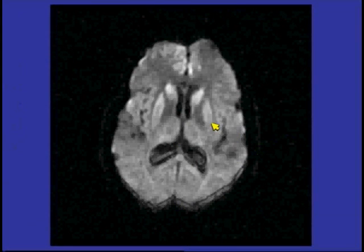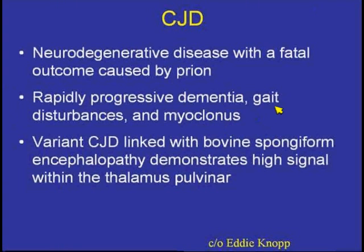The diffusion-weighted scan shows high signal intensity in the caudate nuclei bilaterally as well as within the putamen bilaterally. CJD is caused by a prion — it's one of a family of diseases that includes bovine spongiform encephalitis. It is rapidly progressive, leading to dementia, gait disturbance, myoclonus, and ultimately death. We don't have very good treatment to offer patients with CJD.